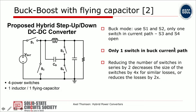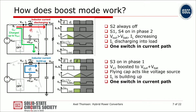A more recent design of a hybrid converter to address the buck-boost problem uses a flying capacitor. This example is from 2017. In this proposed hybrid buck-boost converter, the switches S1 and S2 with the inductor together form a standard buck converter, again with only one switch in the current path, and we add the capacitor and some additional switches to create the boost function. I'll explain how that works in the following slide.